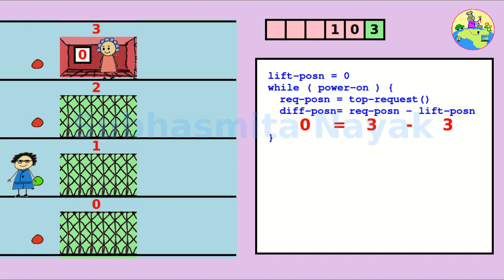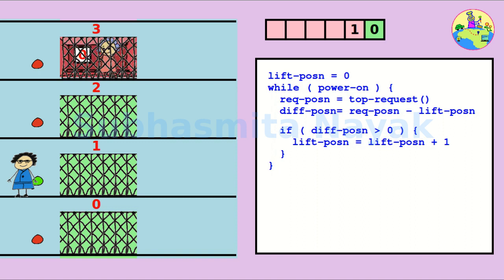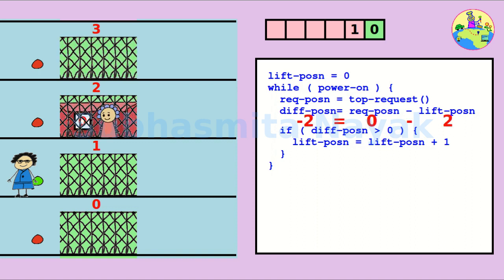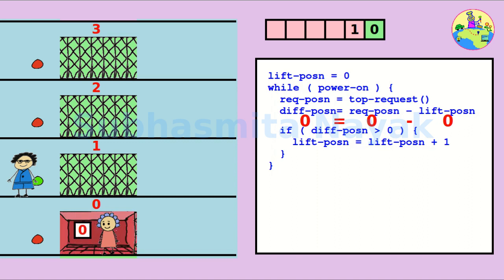It has to go up. That is, lift-position will increase by 1 in each round. If the requested floor number is less than the lift position, the difference is less than 0. It has to go down. That is, lift-position will decrease by 1 in each round.